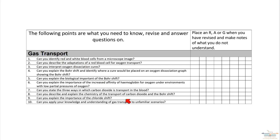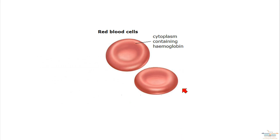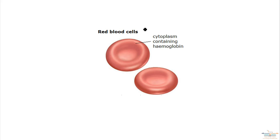Here's the red blood cell and a picture of its structure. What you need to know is that it's a biconcave disc — it looks a bit like a donut. This is a surface view, but from the side the blood cell has a dip in the middle, top and bottom, which is why it's called a biconcave disc.